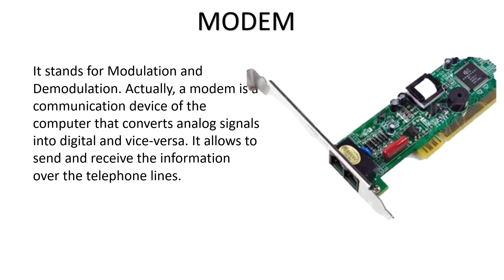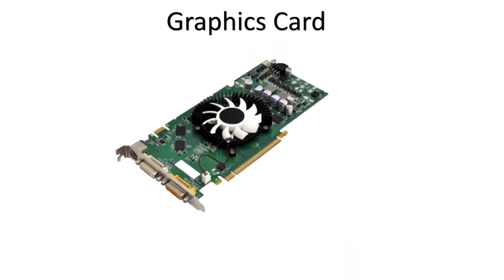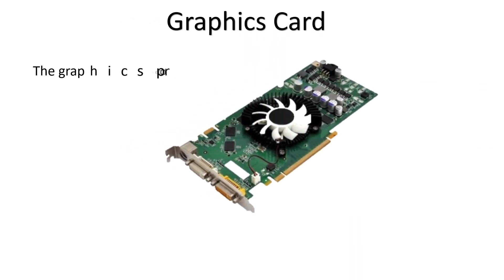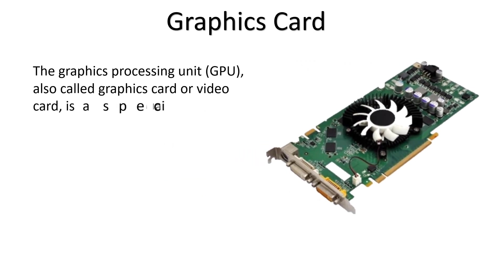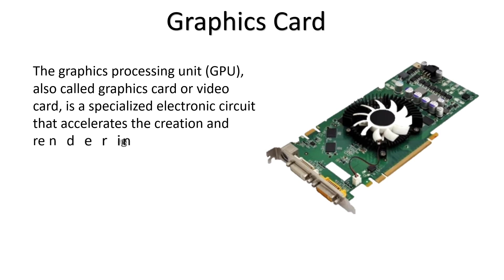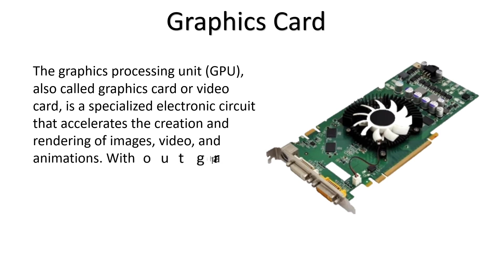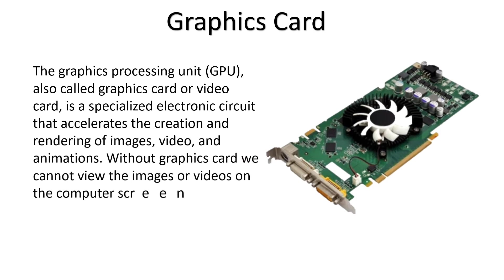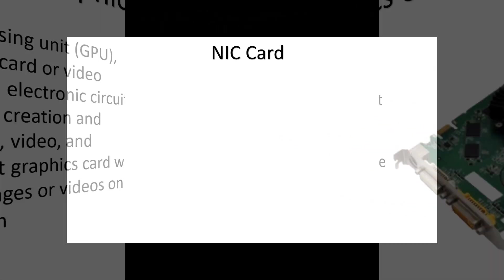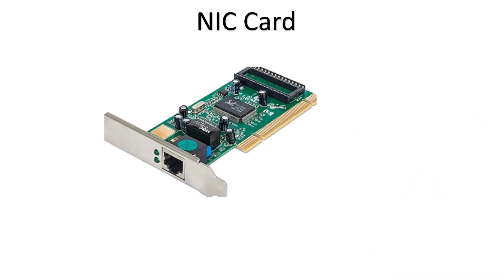Another important device is the graphics card, also called the GPU or video card. It is a specialized electronic circuit that accelerates the creation and rendering of images. The graphics card allows us to create and view images and pictures — without it, we cannot see pictures or images on our computer system. It is also attached to the motherboard.